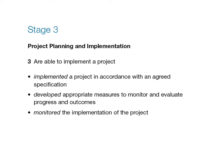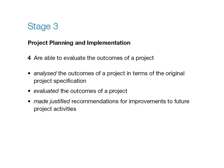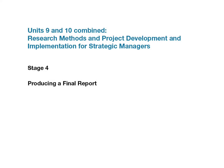You need to demonstrate that you are able to implement a project in accordance with an agreed specification, developed appropriate measures to monitor and evaluate progress and outcomes, and monitored the implementation of the project. Finally, you need to show evidence that you are able to evaluate the outcomes of a project, that you have analysed the outcomes in terms of the original project specification, evaluated the outcomes of the project, and made justified recommendations for improvements to future project activities. Before moving on to Stage 4, you must obtain the approval of your tutor.